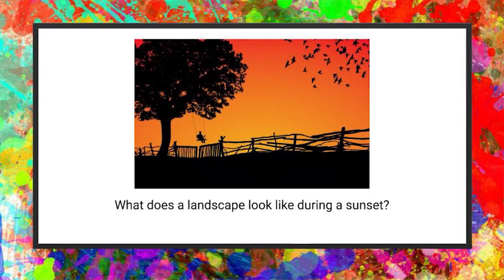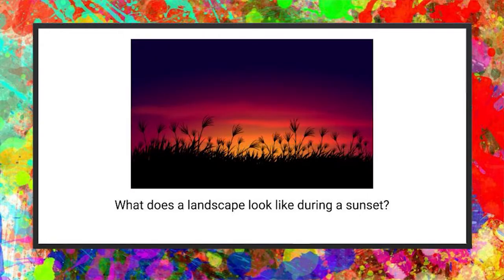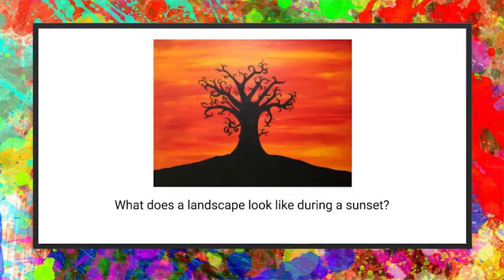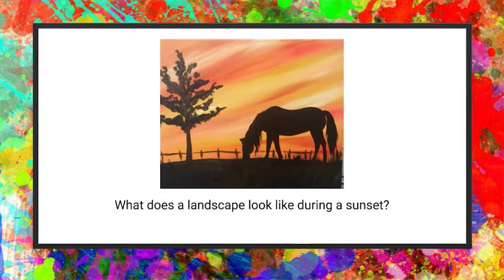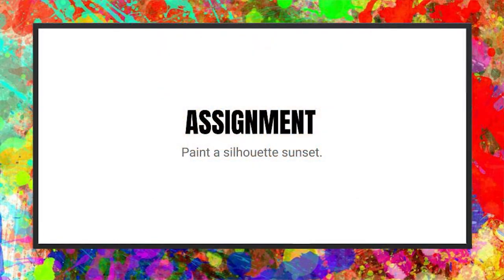Here's another picture of somebody sitting on a swing hanging from a tree, with birds flying in the sky. All of these things are backlit — the sun is setting below the horizon and the whole landscape, including the fence and the tree, is all black. Here's another example showing individual blades of grass and little plants, all black, with a brightly lit sunset sky behind them. Those were all photographs. Now here's a painting with a bright sunset sky and a scraggly black tree, and another painting with a beautiful sunset sky, one tree, a fence, and a horse. That's going to be our assignment for today.